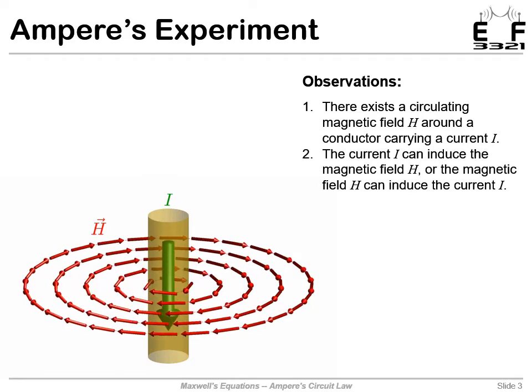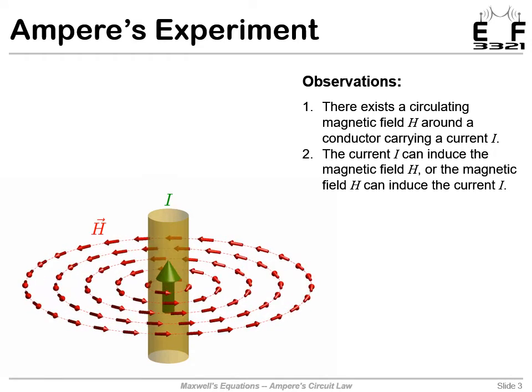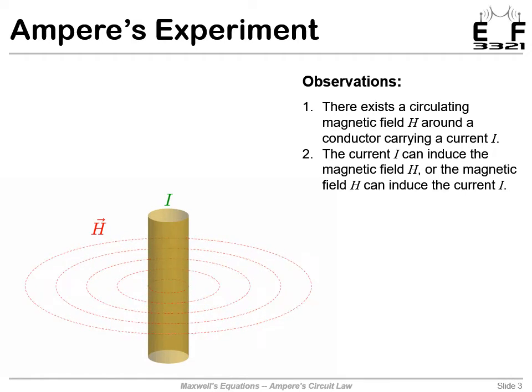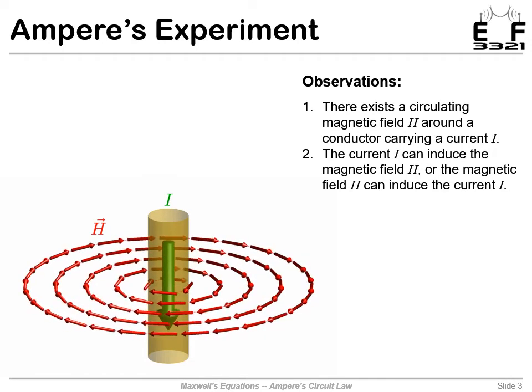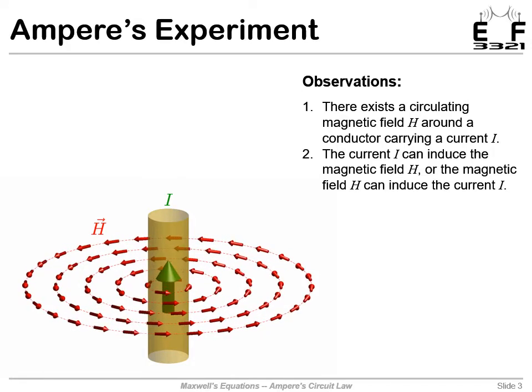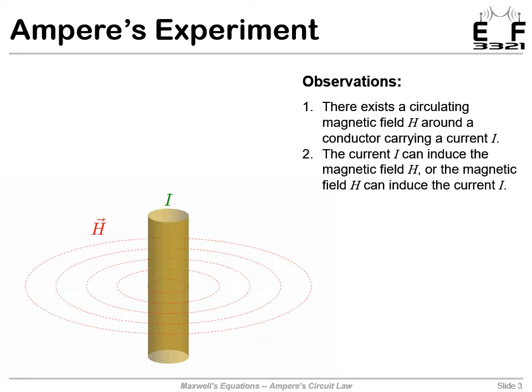It's bidirectional. If we have a static current, that will induce a static magnetic field circulating around that current. It works the other way, but it's a little bit different. If we somehow caused a circulating magnetic field, but it was static, that would not induce a current.